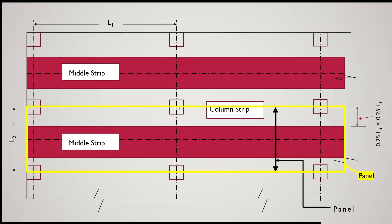This one is a panel, which we discussed in the previous lecture. As per IS456, a panel is defined as the area bounded center-to-center of columns. So for column number one, two, three, and four, if we draw a rectangle connecting them, that area is called a slab panel.